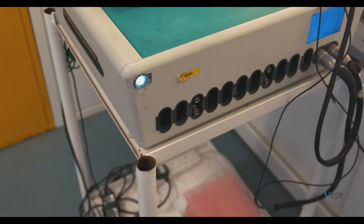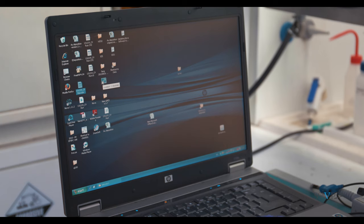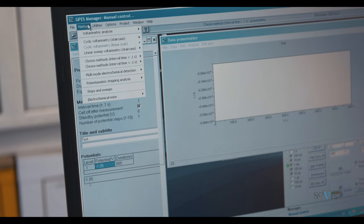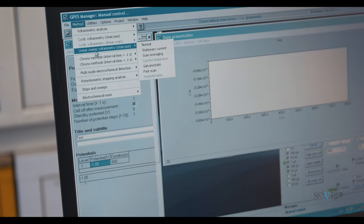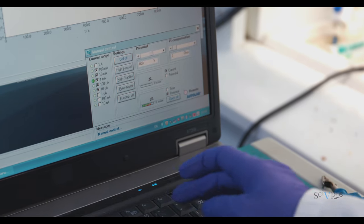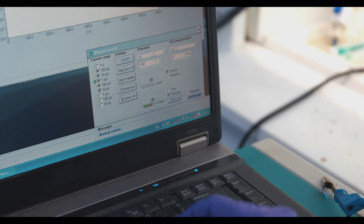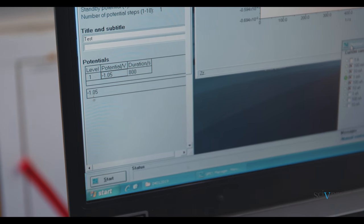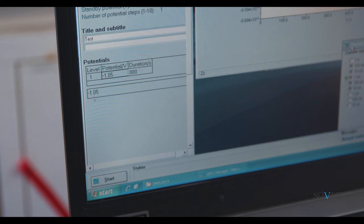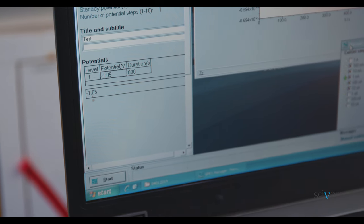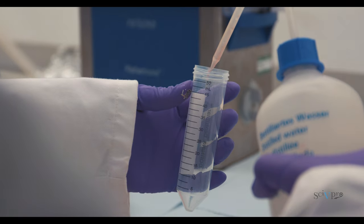Turn on the Autolab Galvanostat and open the GPES software. Go to Method, Chrono Methods, Amperometry. In the manual control pop-up, select a current range of 1mA. Type a potential of –1.05V, a duration of 800 seconds, and a sampling time of 0.05 seconds.